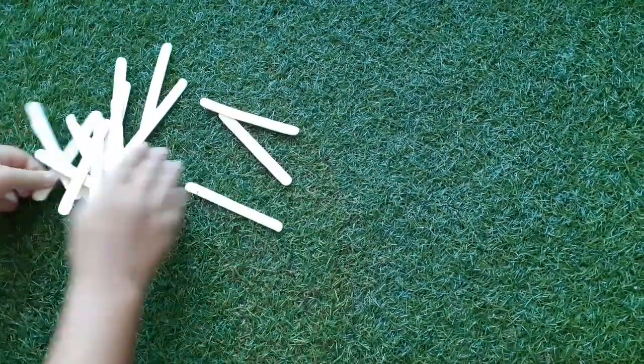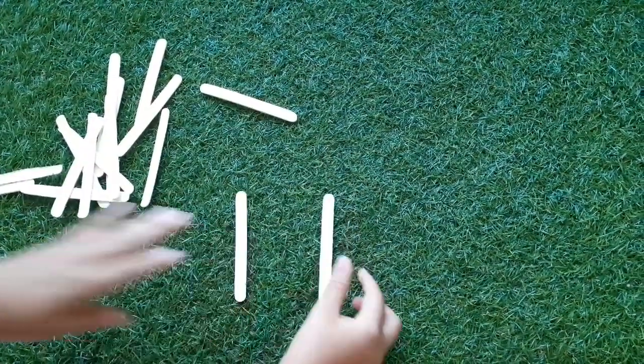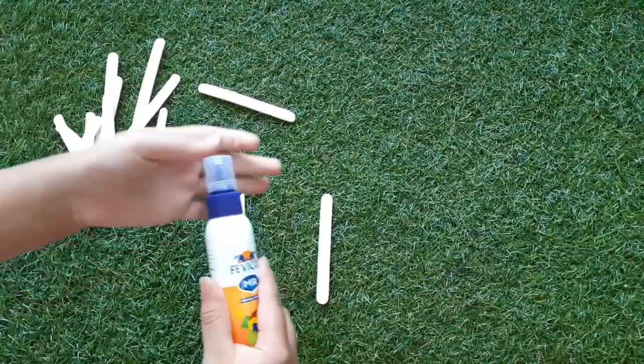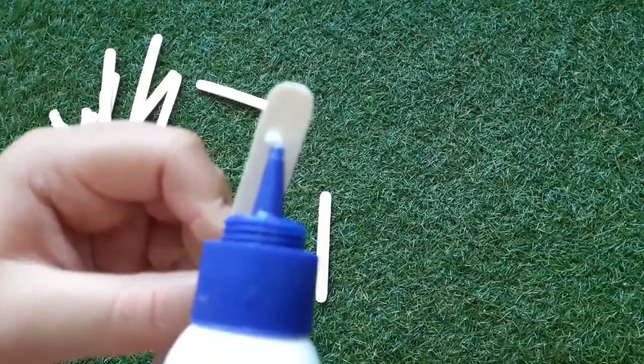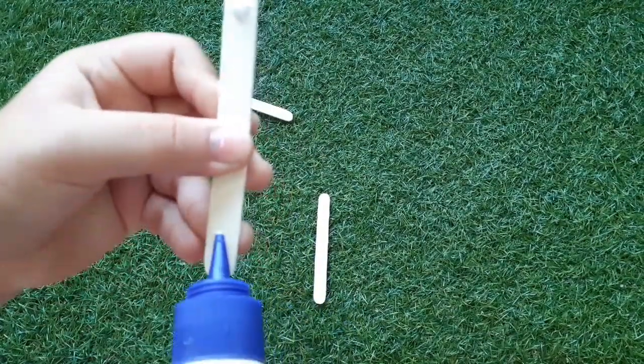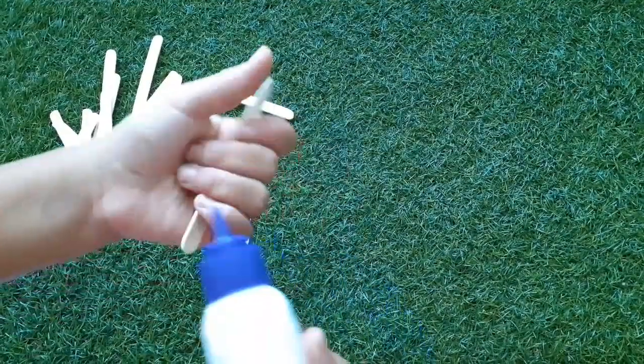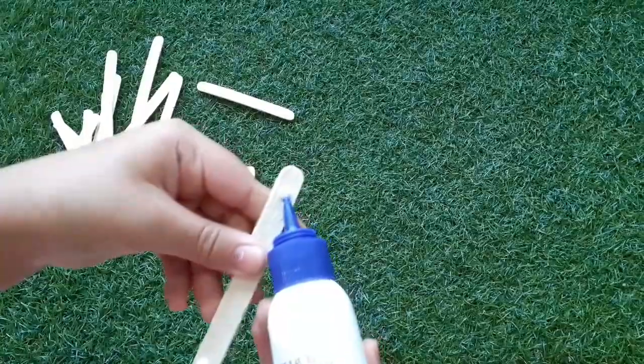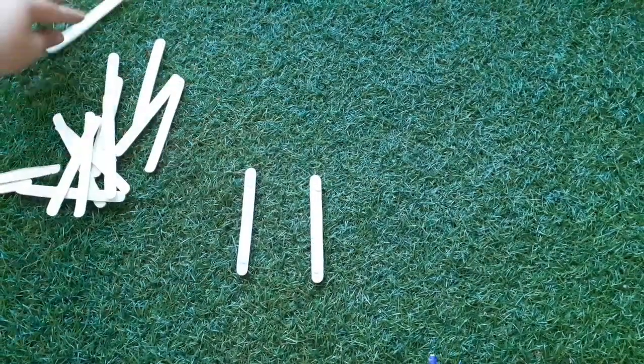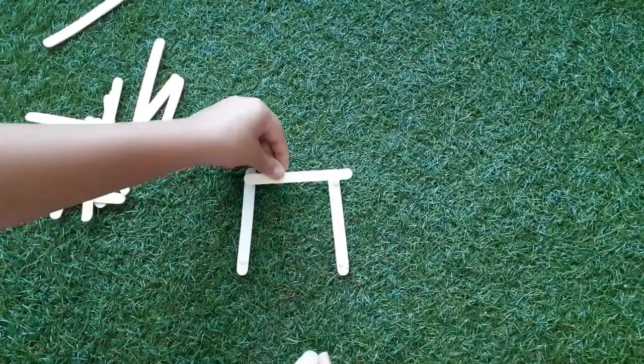First take the ice cream sticks and arrange them like this. Take the glue and put it like this. Arrange the ice cream sticks in a square.